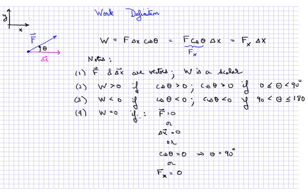W is equal to zero if the force is equal to zero, or if the displacement is equal to zero, or if cosine theta is equal to zero, which happens, for example, if theta equals 90. That would happen if the force is perpendicular to the displacement, or to say it a different way, if f sub x equals zero.